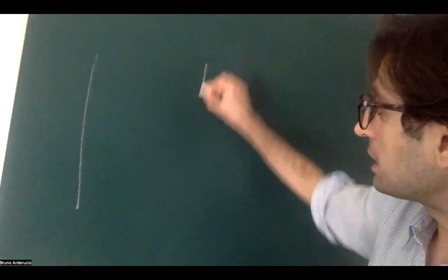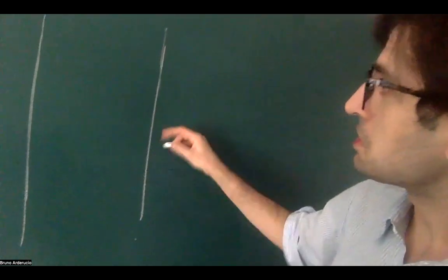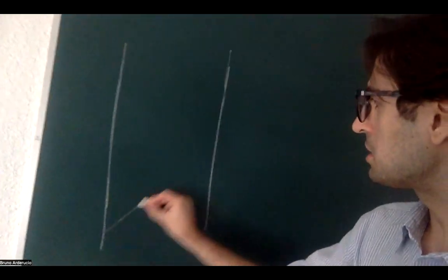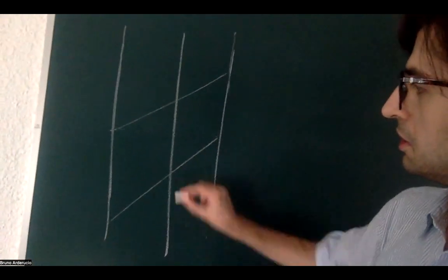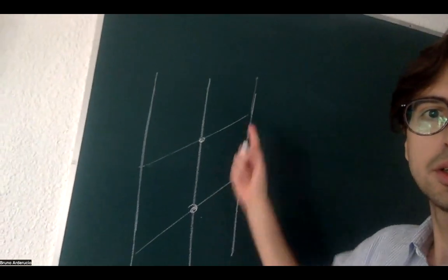Imagine you have two points in spacetime connected by a null curve. Is it possible that there is also a timelike curve connecting the same two points? If you ground your intuition on global Minkowski spacetime — R⁴ with the Minkowski metric — you would think the answer is no. But that's actually false, and I'm going to draw a simple example on the board.